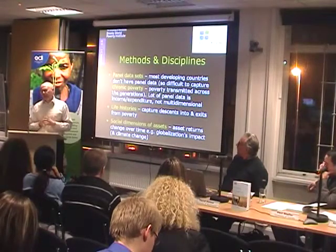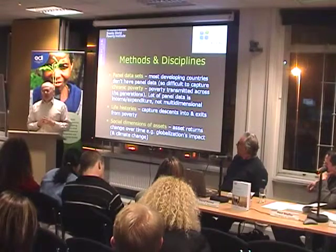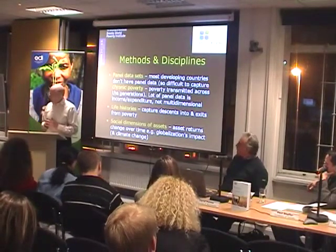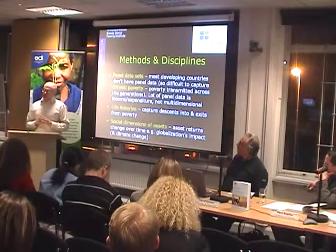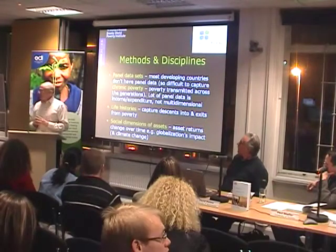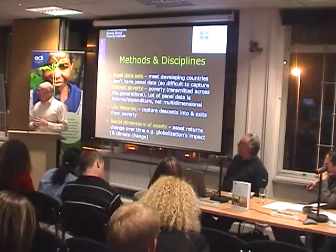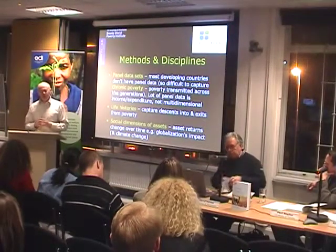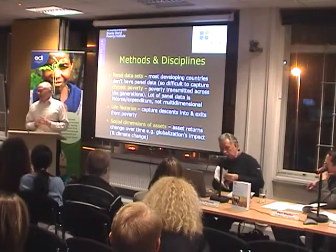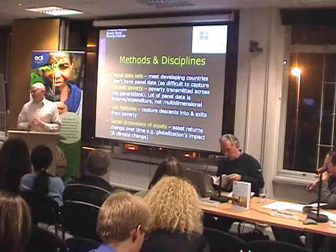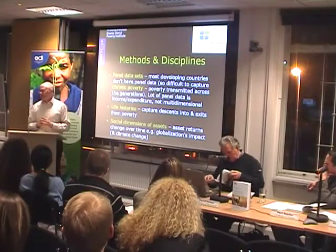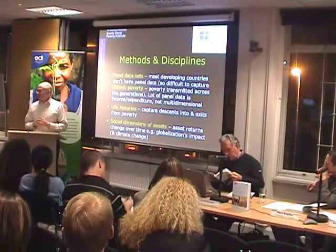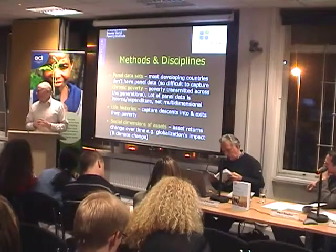We think the multidimensional side of panel data is extremely important in the analysis of chronic poverty. You'll see this when thinking about the impact of the present financial crisis and the downturn of the global economy on the chronically poor. We'll see effects in terms of income and expenditure, but also in terms of non-income, non-monetary measures of poverty — particularly child nutrition, participation in education, and probably a downturn in school attendance by females and girls in particular. To capture that over time, you're going to need multidimensional data sets.